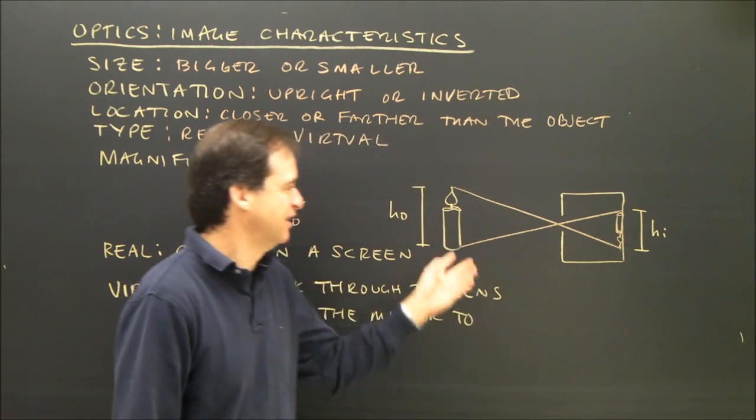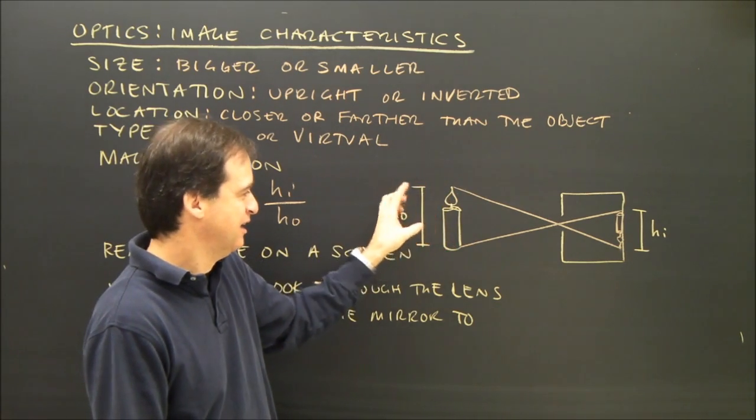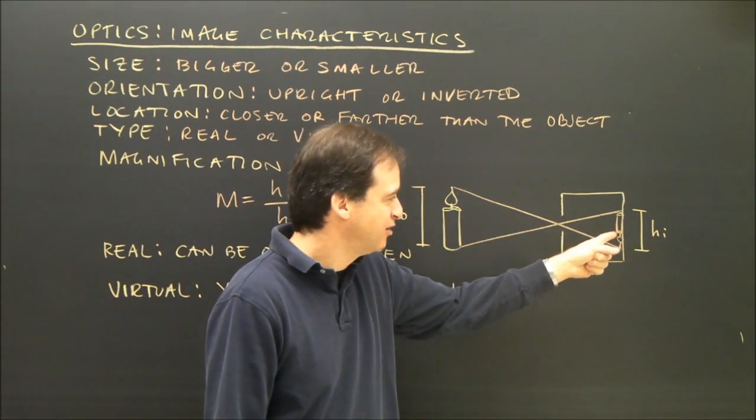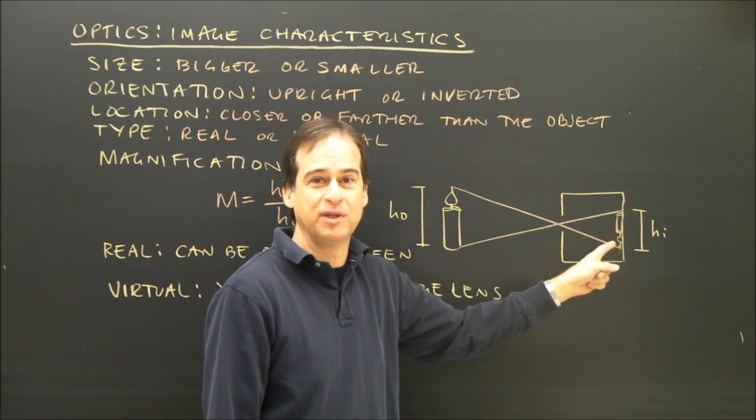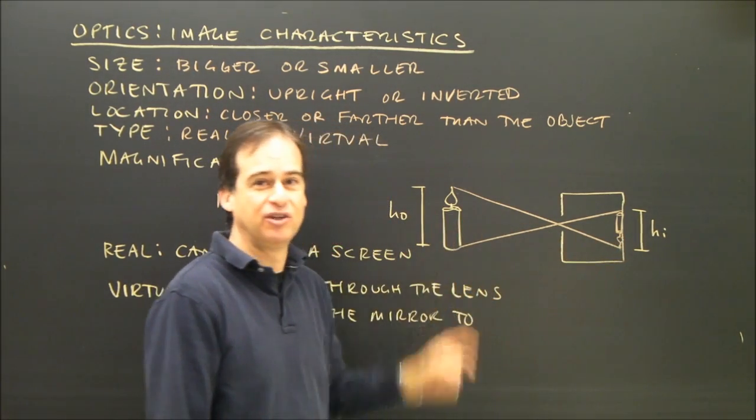If you look at something like this, here's a simple camera. I've got a picture, I've got an actual candle, let's say, and the image is projected through the camera onto some film at the back of the camera. And we want to describe how is that image compared to the original.